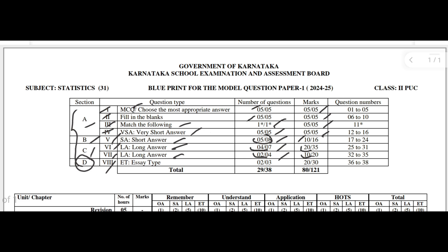The last main is the eighth main, which comes in Section D. Here you are going to get ET type questions — ten mark problems. Totally three questions are there; out of three you have to answer any two. Two into ten equals 20 marks. The total question paper is for 80 marks and the total number of questions you have to answer is 29. From Parts B, C, and D you have extra questions. Including extra questions the total question paper consists of 38 questions; out of 38 you answer 29. In Part A all questions are compulsory. The total marks along with options is 121; you have to answer for 80 marks.